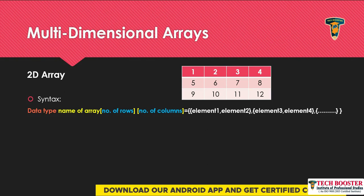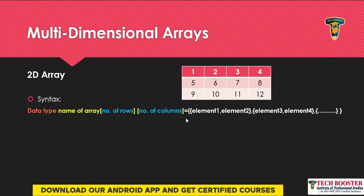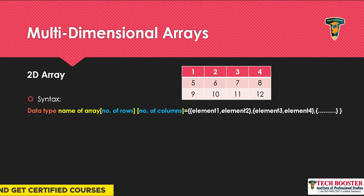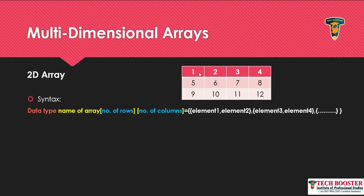If you want to store values manually, you can directly use curly brackets as we saw in the previous video. Here, since I have three rows and four columns, I'll have 12 elements overall. You can directly write all your elements within a single curly bracket and the program will automatically detect the first row, second row, and third row.